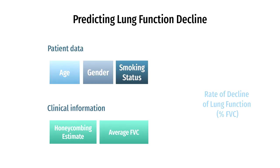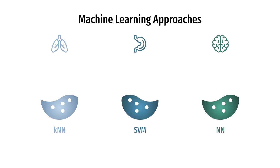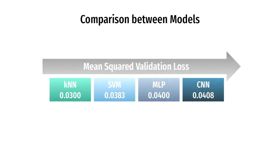Using the two solutions described, we now have all the training data needed to train a predictions model. At this point, we decided to explore three different machine learning approaches: k-nearest neighbors, support vector machine, and neural network. The K and N model produced the best results with the lowest mean squared validation loss, despite being much simpler compared to more complex models like NLP or CNN.